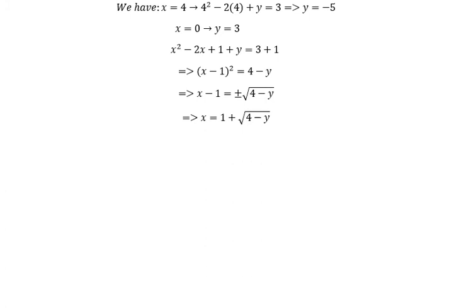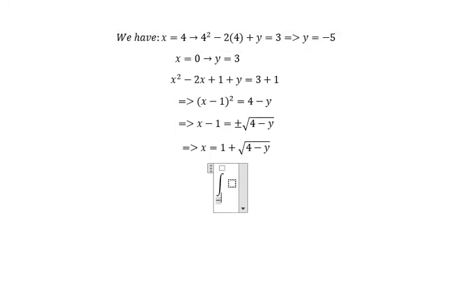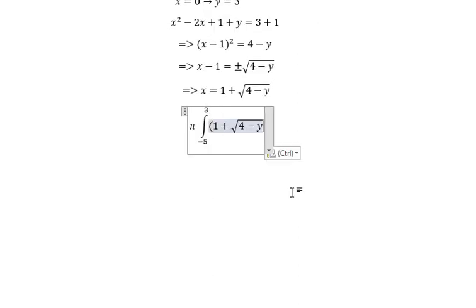And now we can find the volume. We have negative 5 to 3, and we have pi, and this one, we put in the square, dy.